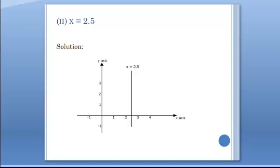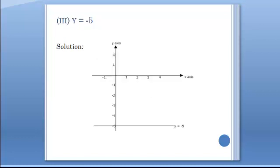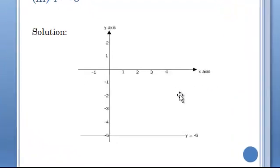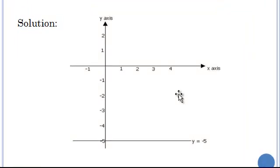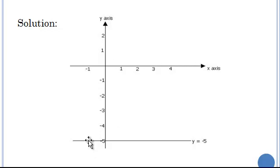Part 3 asks us to draw the graph of the relation y equals minus 5. First we identify the point minus 5 on the y-axis, then we draw a line through minus 5 that is parallel to the x-axis. All along this graph, y is equal to minus 5.